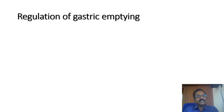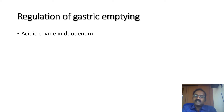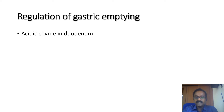Regulation of gastric emptying: when acidic chyme enters into the duodenum, it releases secretin. That secretin inhibits gastric emptying, so only a small amount of food enters into the duodenum.